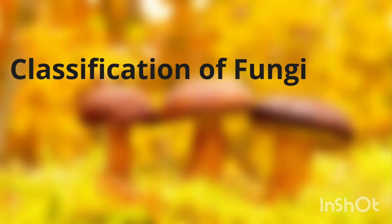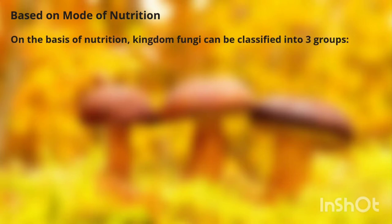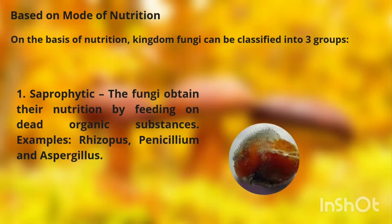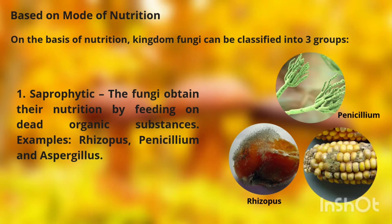Classification of Fungi: Kingdom fungi are classified based on different modes. Based on mode of nutrition, kingdom fungi can be classified into three groups. The first is saprophytic — fungi that obtain their nutrition by feeding on dead organic substances. Examples are Rhizopus, Penicillium, and Aspergillus.